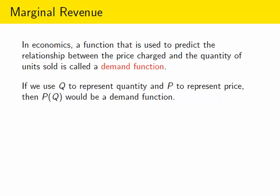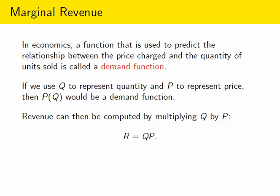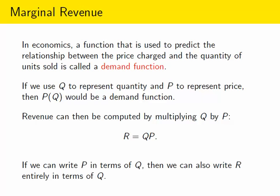For example, if we let Q represent the quantity and P represent price, then if we can write P in terms of Q, that would be a demand function. You can then get revenue by just multiplying the quantity times the price, and if you can write P in terms of Q, that means you're going to be able to write the revenue entirely in terms of Q.